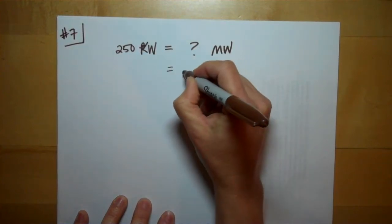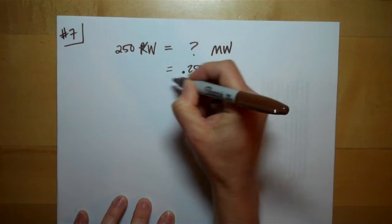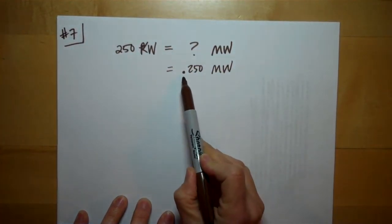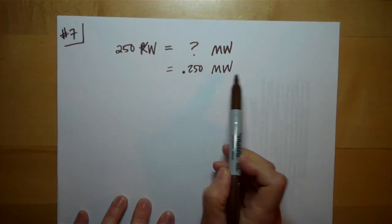So, you're just going to move the decimal place three times to the left. 250 kilowatts is the same as .25 megawatts.